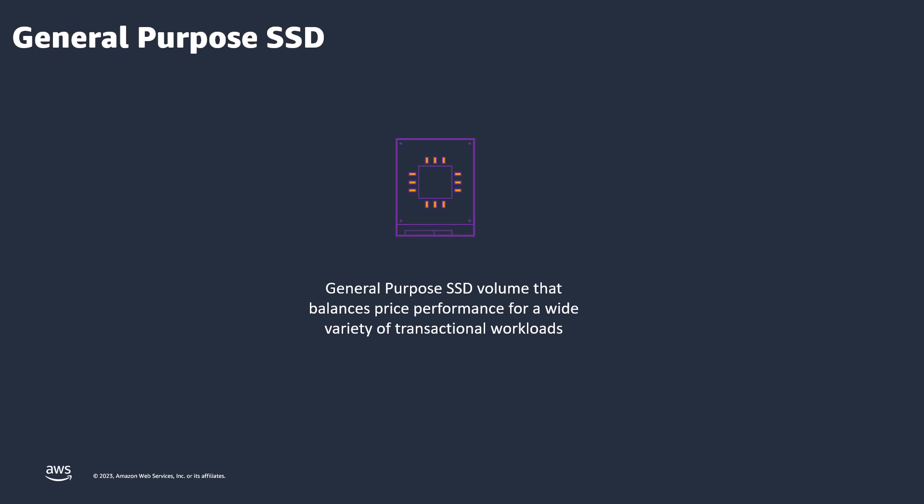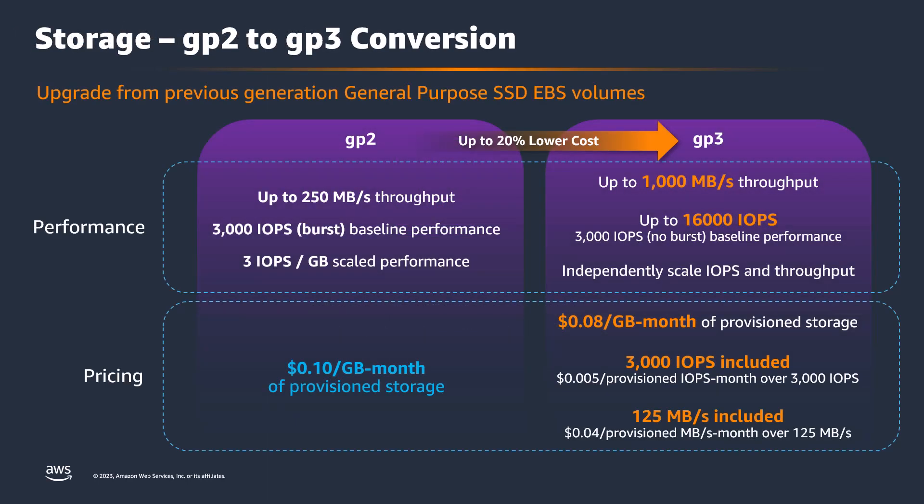In December 2020, the third generation of general purpose SSDs was released, called GP3. The GP3 offering made significant improvements to the performance customization aspects over the previous generation. With GP2 EBS volumes, the performance was closely coupled with the size of the volume — for every one gigabyte of capacity, GP2 EBS volumes would get three IOPS of performance. With GP3 volumes, performance can be customized independently from the storage capacity, allowing even smaller capacity volumes enhanced performance capabilities, up to 16,000 IOPS and 1,000 megabits per second throughput.